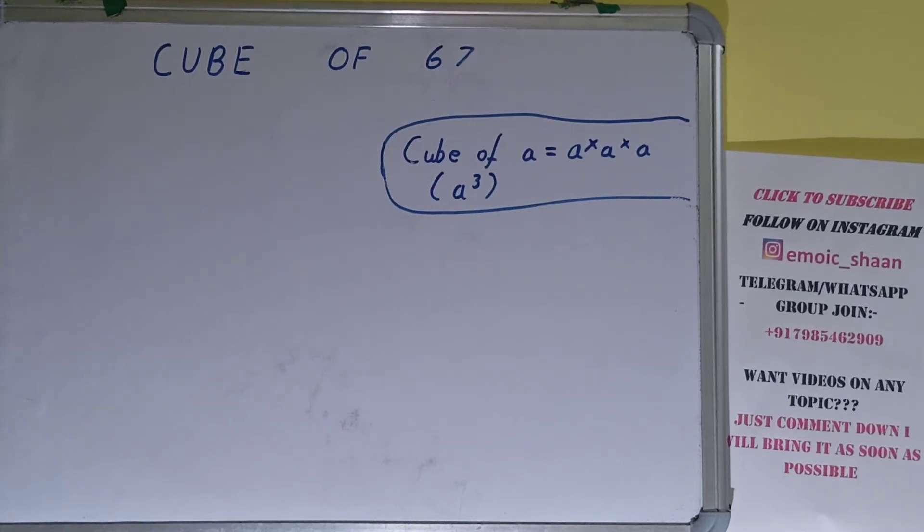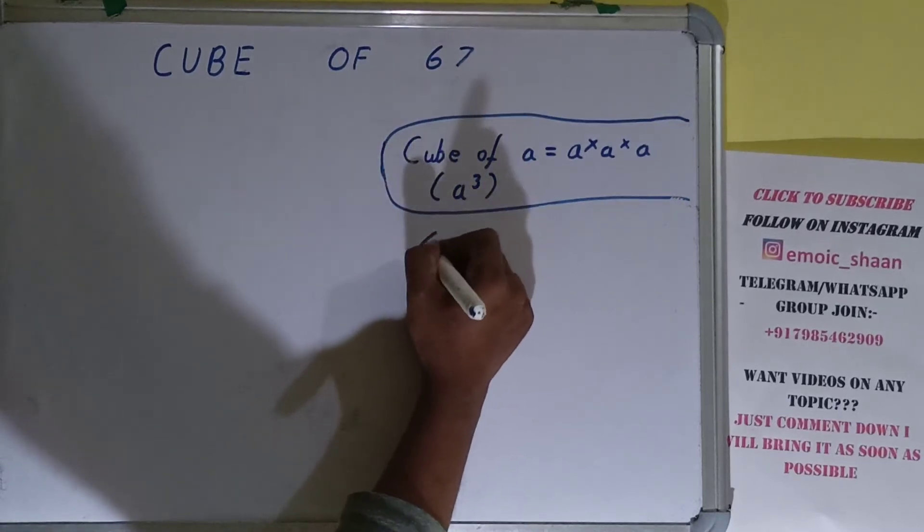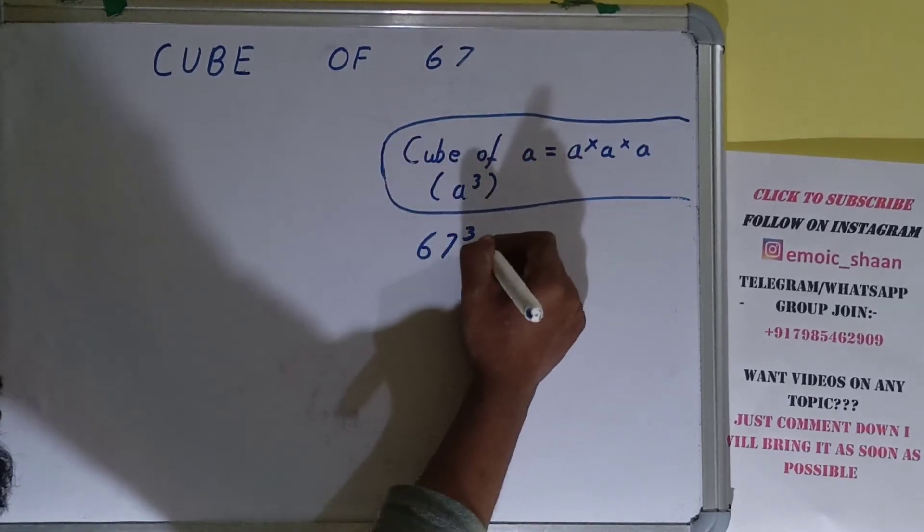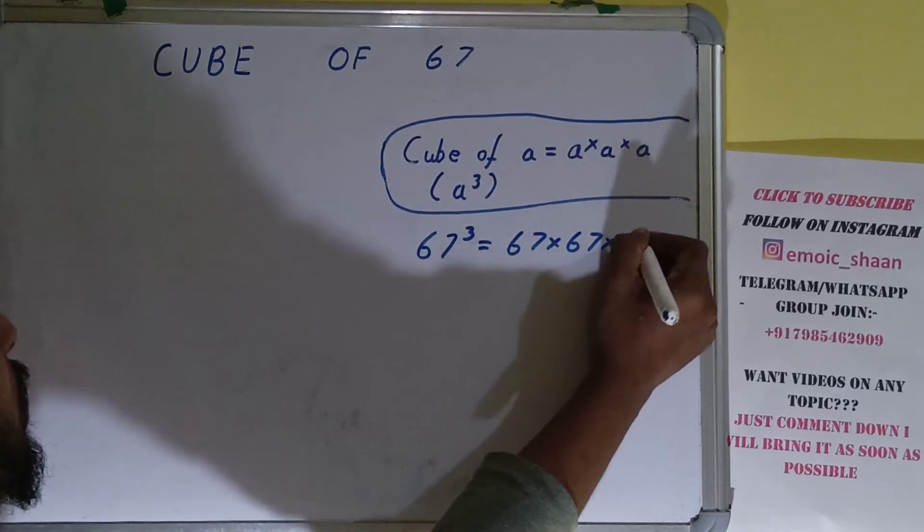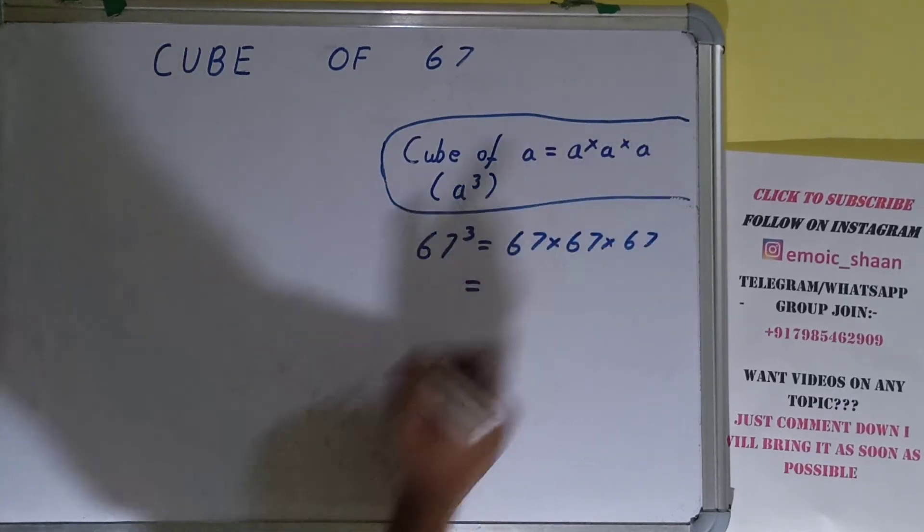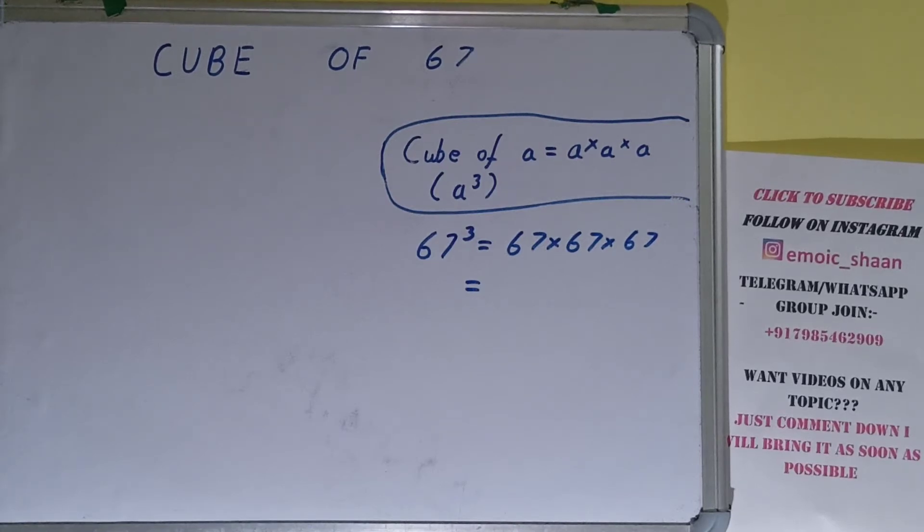of 67. For that, we need to put 67 in place of a. So 67³ equals 67 × 67 × 67. Now to calculate the answer, we'll do normal